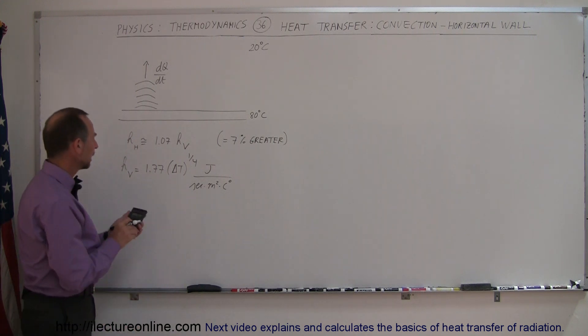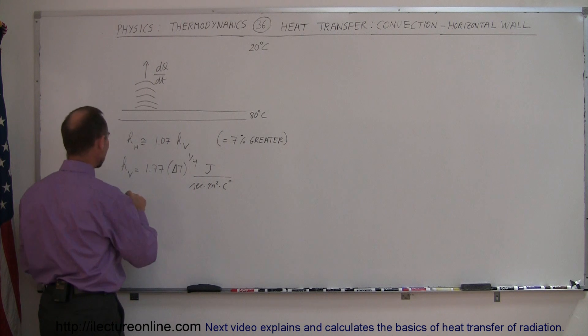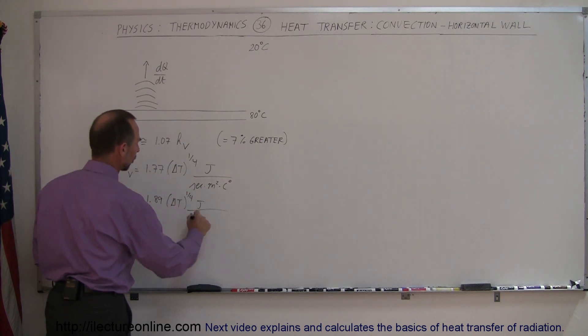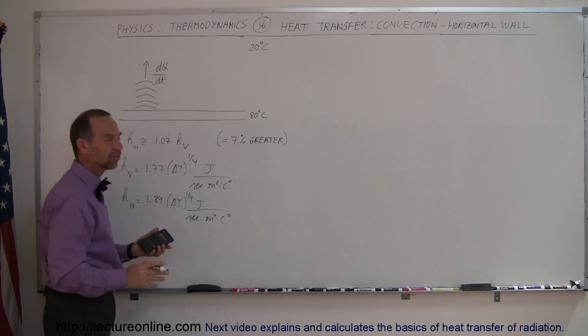So let's do that. So we have 1.77, and we multiply that times 7%, so 1.07, that gives us about 1.89. So the H for the horizontal is about 1.89 times delta T to the one-quarter power joules per second per meter squared per centigrade degree. And again, this is an approximation.